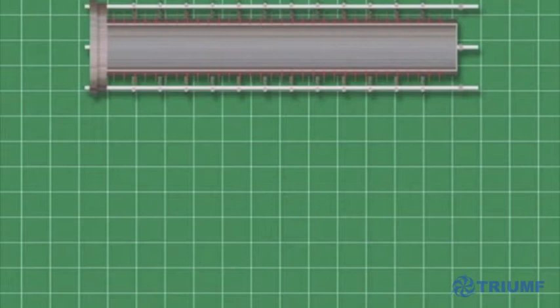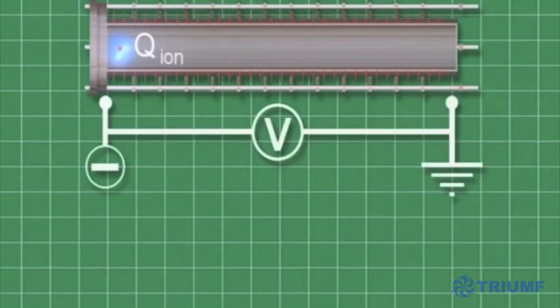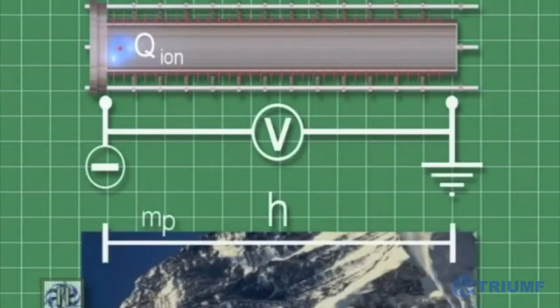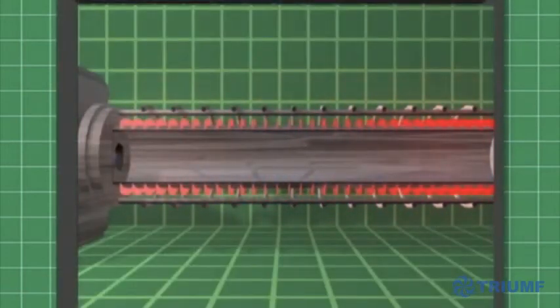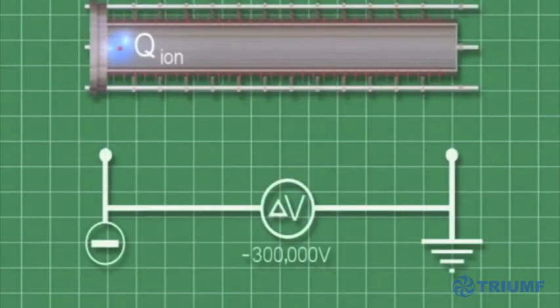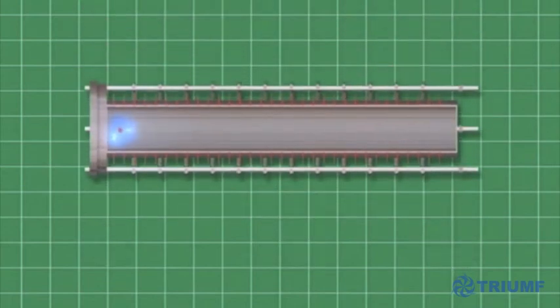However, we can make very strong electric fields. In an electric field, voltage difference and charge replace the height difference and mass in a gravitational field. At the ion source, the ions are given a boost by an electrical potential difference of 300,000 volts to send them on their way to the cyclotron.